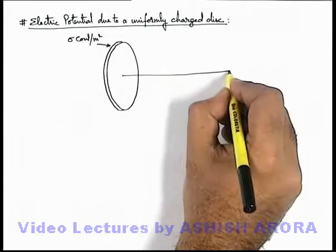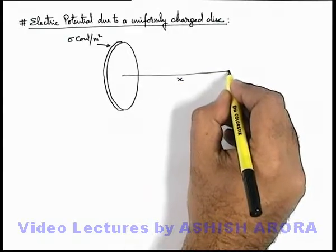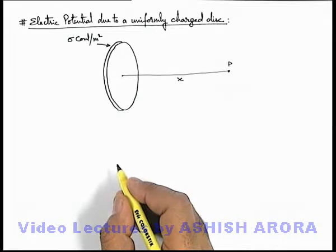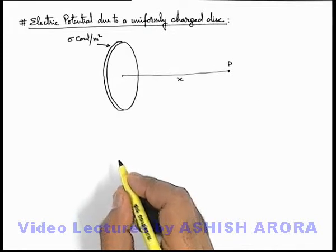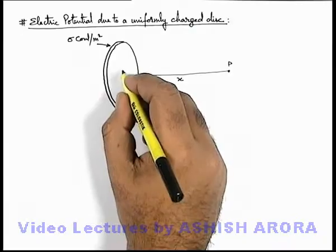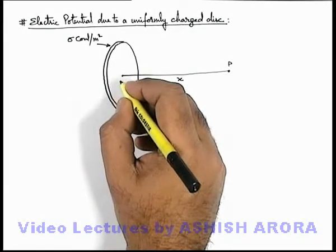We are required to find the potential at a distance x on its axis from the center at point P. To find any result for a disc, we need to consider elemental rings within the disc and integrate those elemental rings.